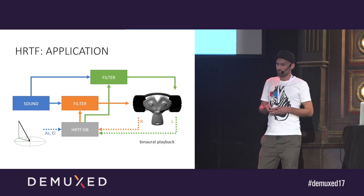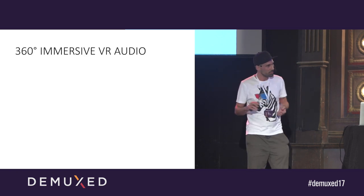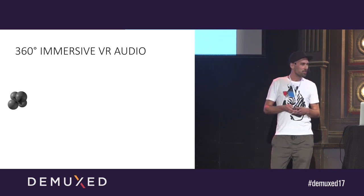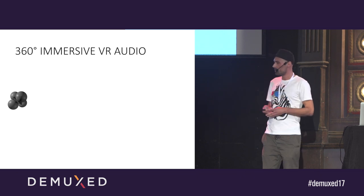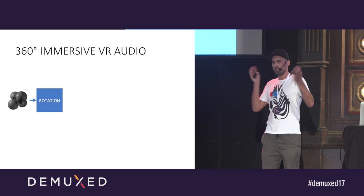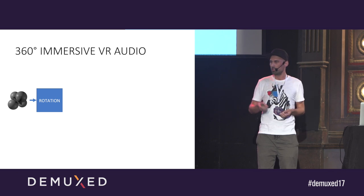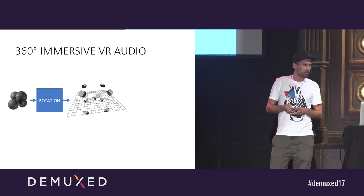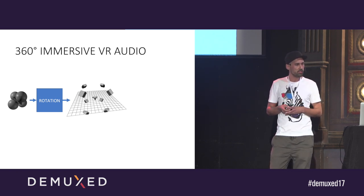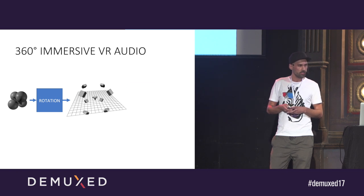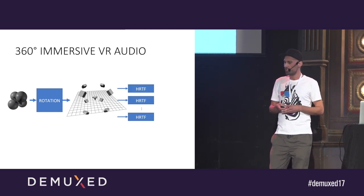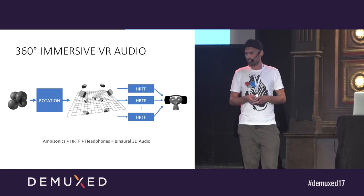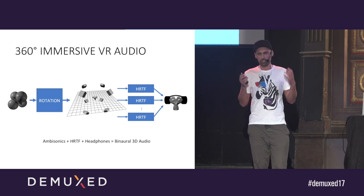Putting everything together to get 360-degree immersive VR audio: we create an ambisonic recording, then rotate the audio sphere depending on where we look. We position virtual speakers in the sound field by placing virtual microphones, then apply HRTFs to the directions of those speakers and mix it down to a stereo stream. That's what binaural 3D audio is, and what gives us the impression that we are right in there.